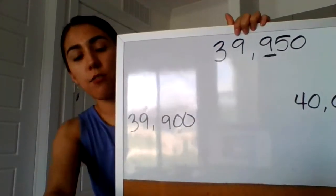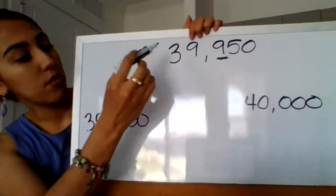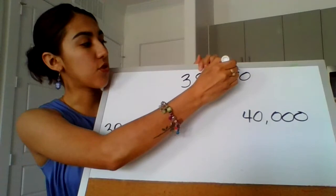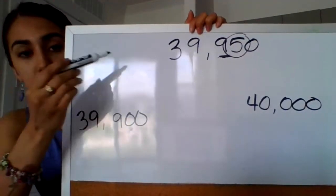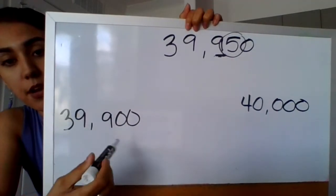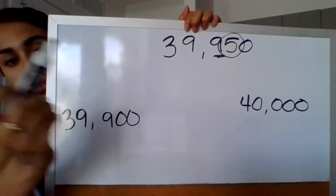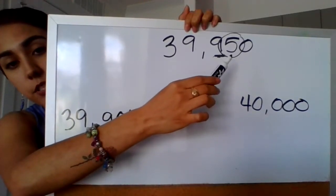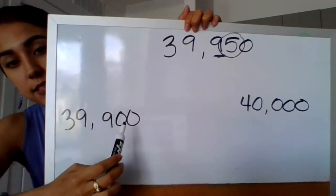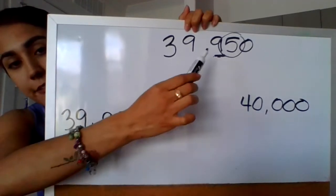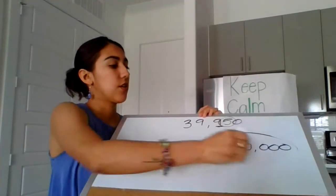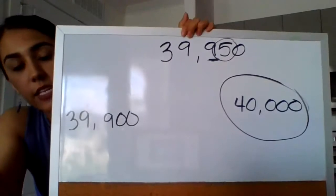Well, let's follow our rounding rules. You underline the place value they want you to round to, and then you circle the number to the right. That number that you circle is going to let you know if you're going to round down or if you're going to round up. So is that number that we circled 5 or more, raise the score? Or is it 4 or less, let it rest? The 5 is 5 or more, raise the score. So your answer is 40,000.